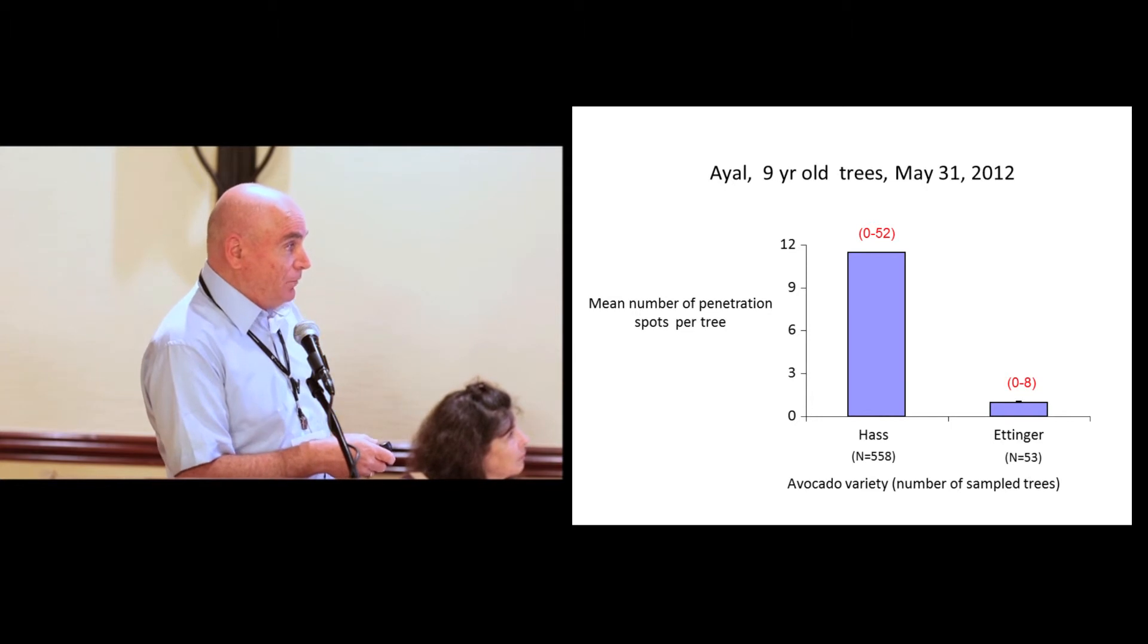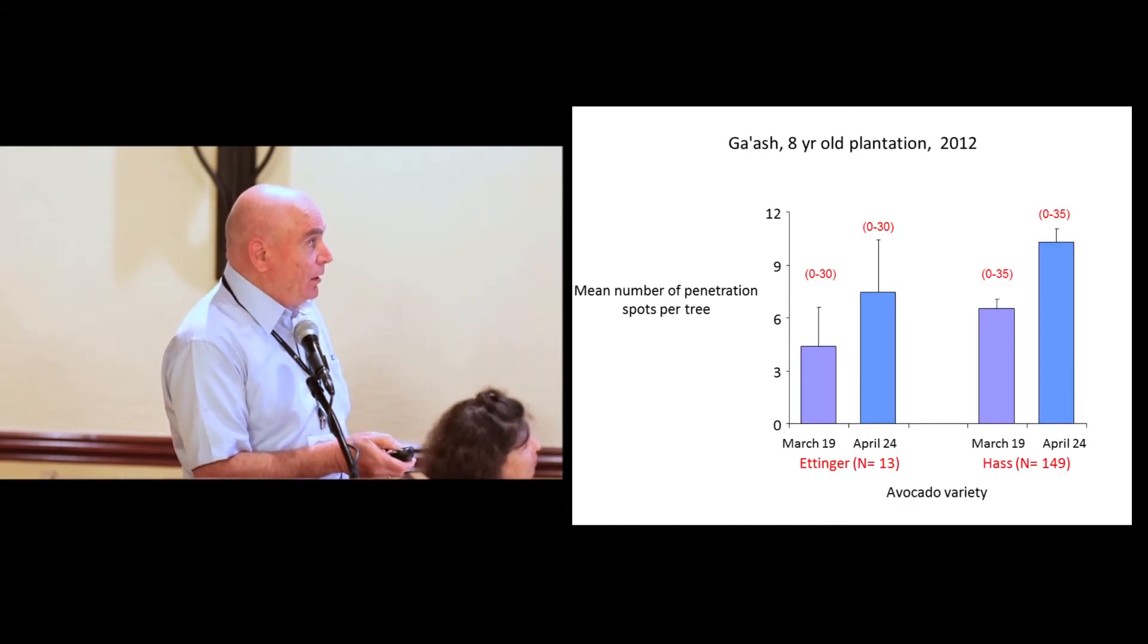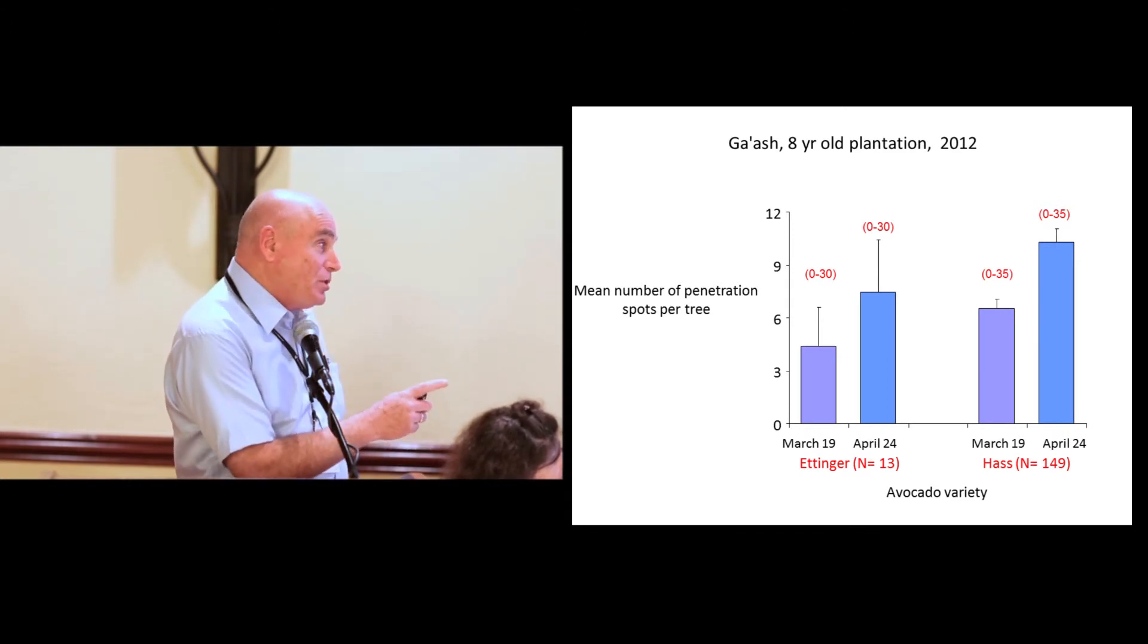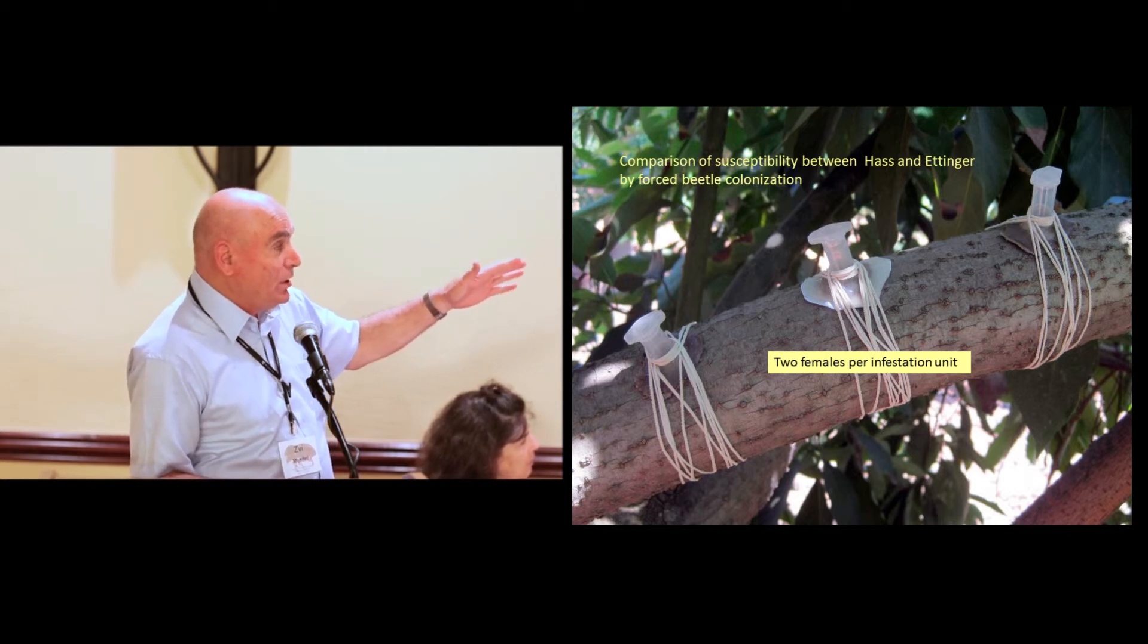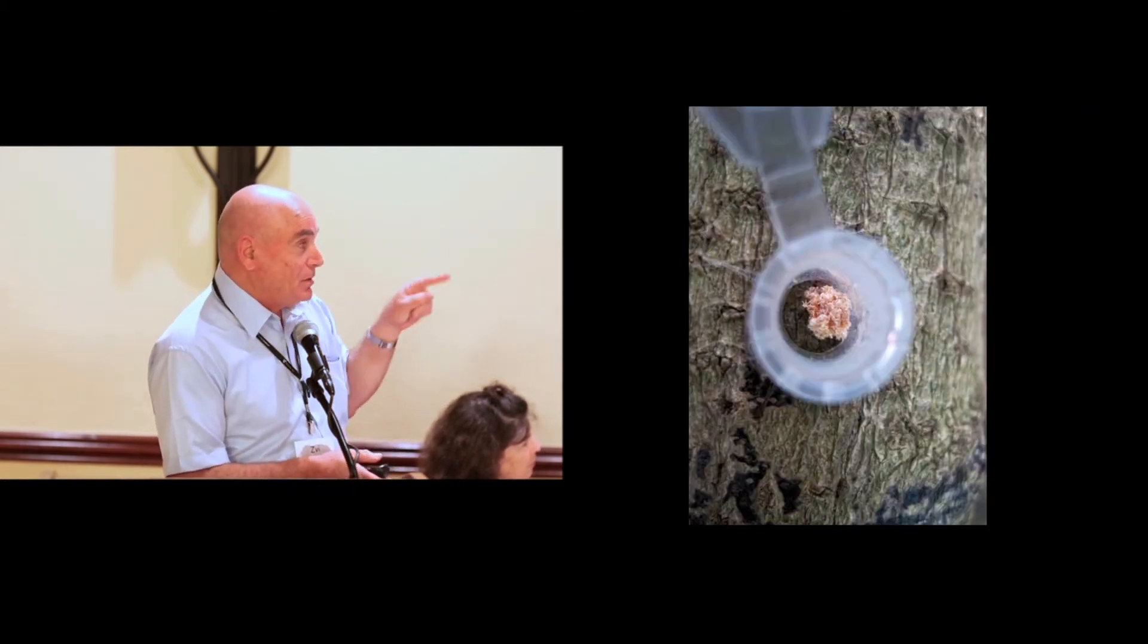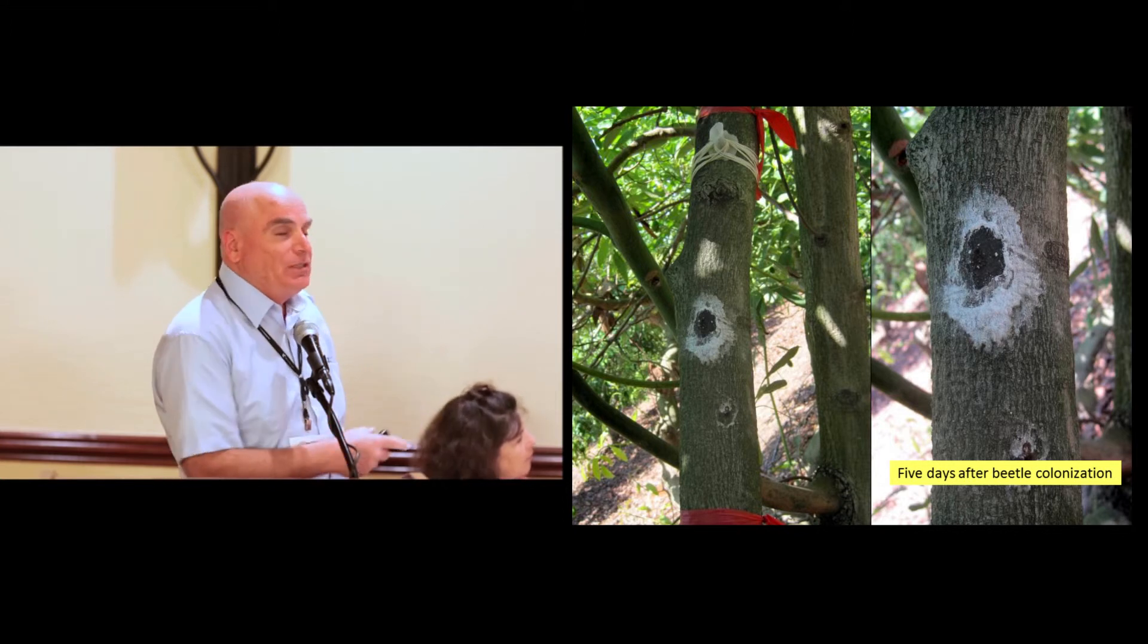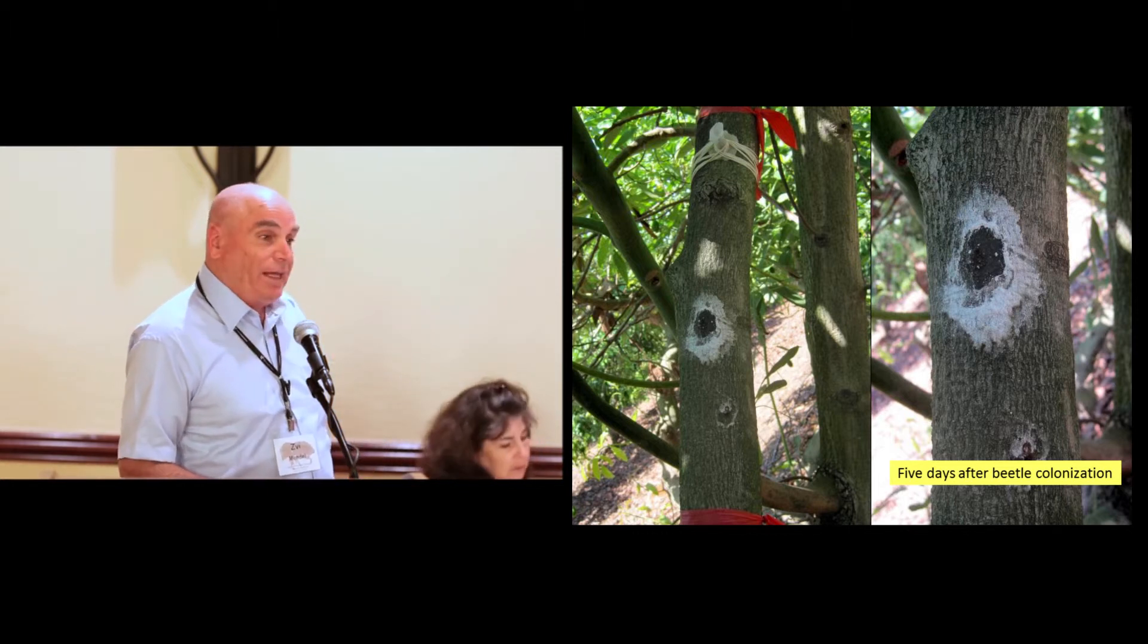Here, for example, you see the differences between two cultivars. The Hass, which is very susceptible, and Ettinger, which is much less susceptible on most sites. However, in another site, you see differences, although the sample size of the Ettinger is not very large. But again, you see that in this particular site, there is not much difference between Ettinger and Hass. We tested that, so what you can see here, we actually forced the beetle to penetrate Hass and Ettinger trees. And this is the typical symptom or sign that the beetle actually penetrates the wood. And after five days, you begin to see the symptom on the susceptible trees. You don't see the symptom so quickly on Ettinger, but only on Hass.